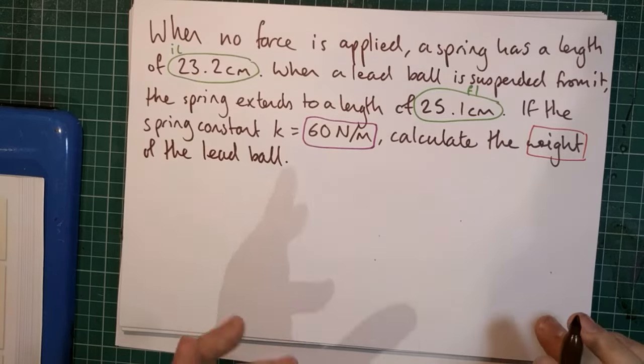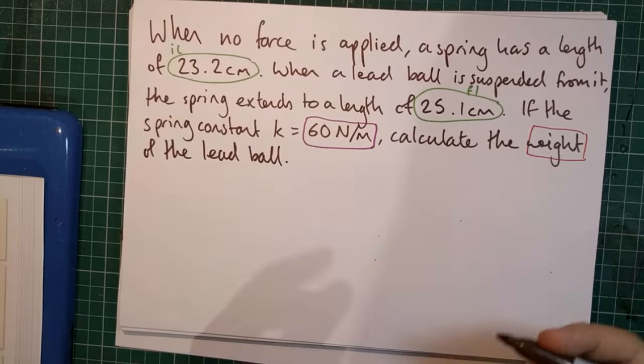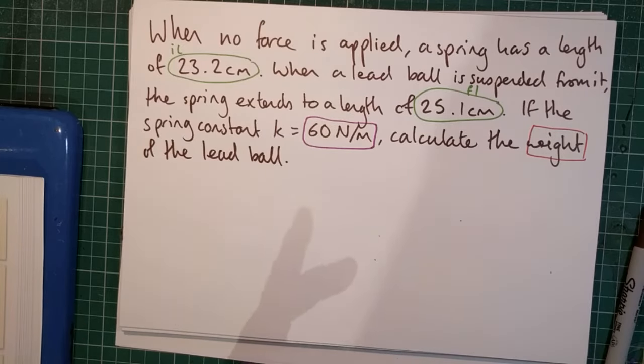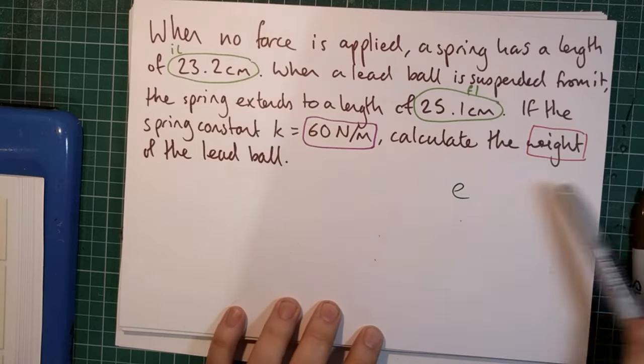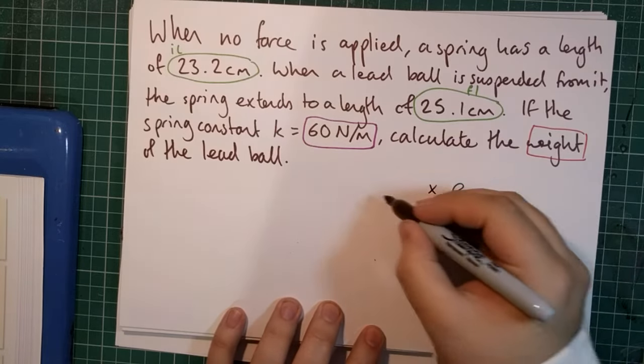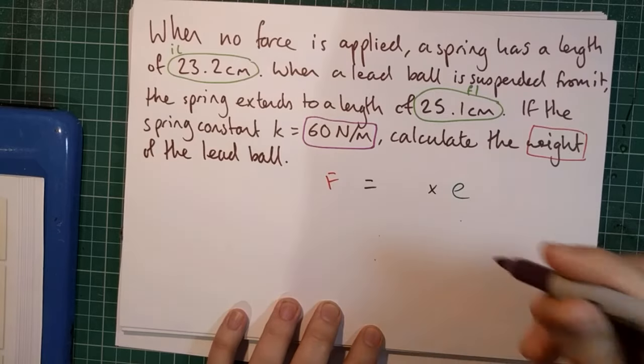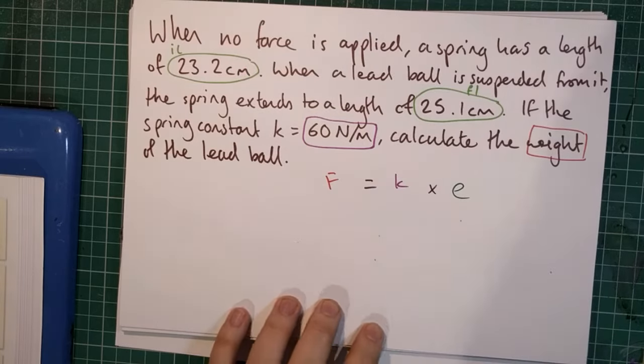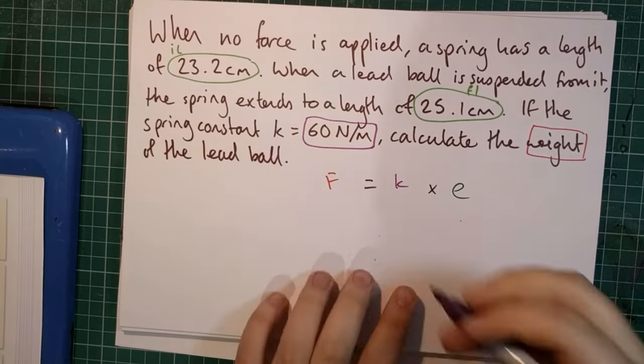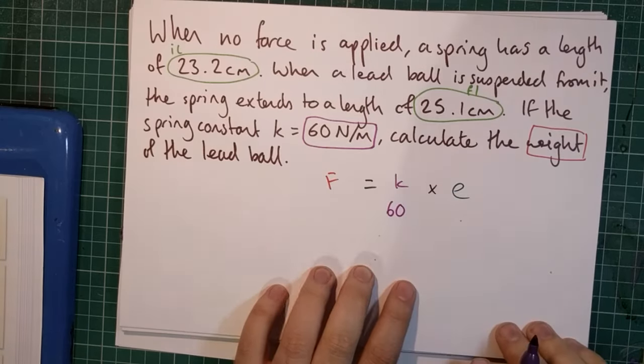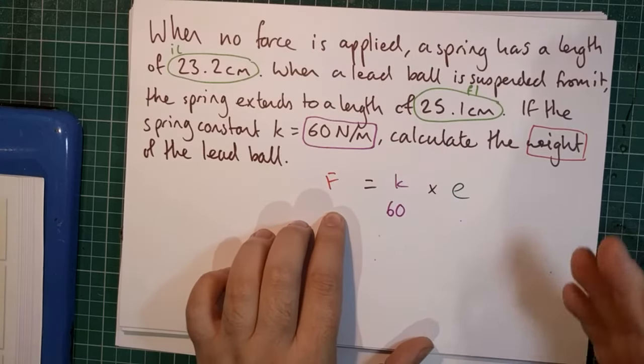So, let's have a look. Now, I need to know the extension before I do anything else. In fact, let's make a note of our equation, because that's usually a good place to start. All right, so we have F equals K times e. Okay, so we know what K is. We can put that in. That's 60. We don't know what F is, but we're trying to find it out.